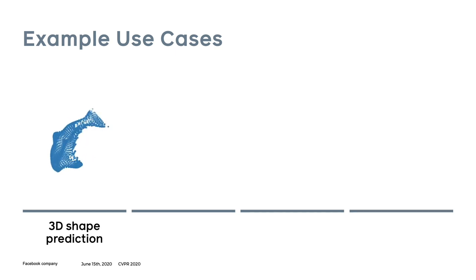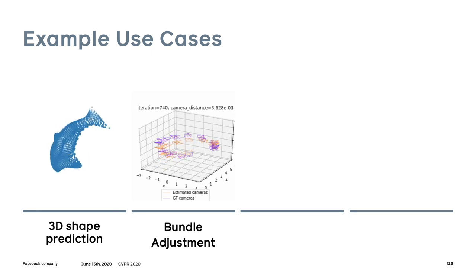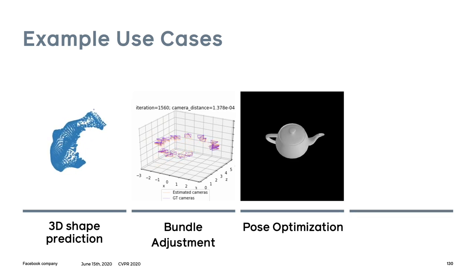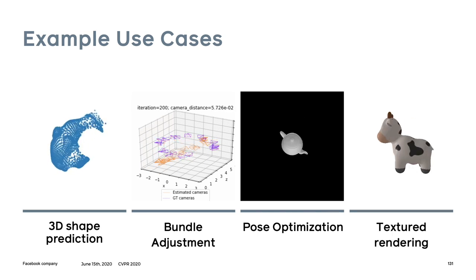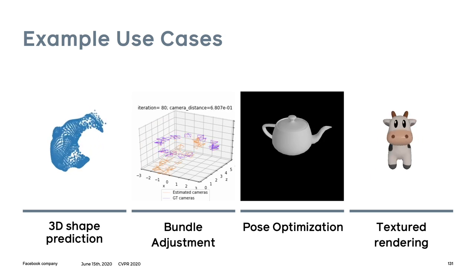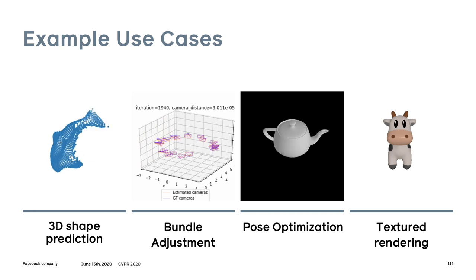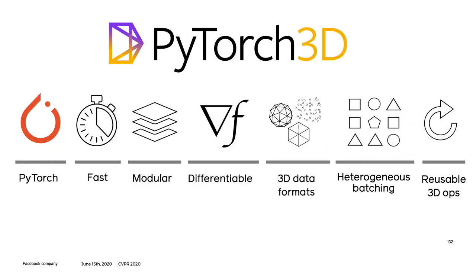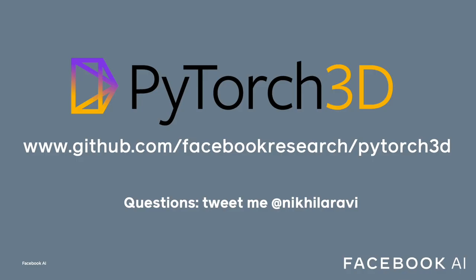Finally, PyTorch 3D can be used in real-world applications including 3D shape prediction, bundle adjustment, pose optimization given a reference image, and textured rendering. Tutorials for these four examples are on the PyTorch 3D GitHub repository. To conclude, PyTorch 3D is a fast, modular, and differentiable library for 3D deep learning with many common 3D operators, differentiable rendering, and heterogeneous batching support. You can find the code on GitHub and reach me on Twitter with any questions.